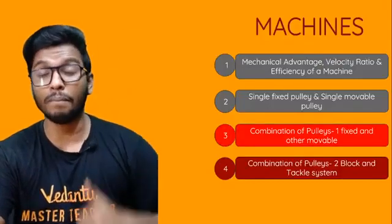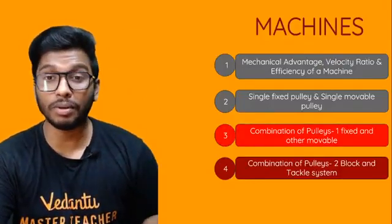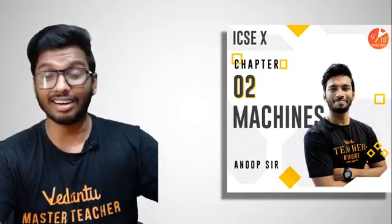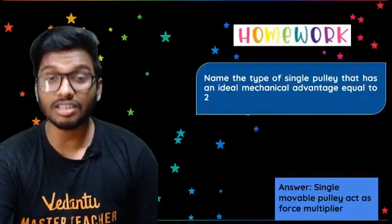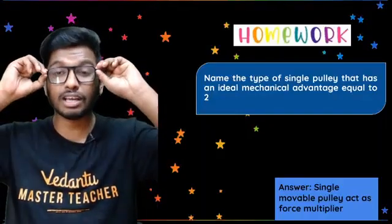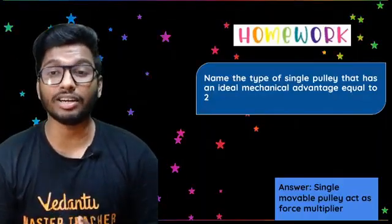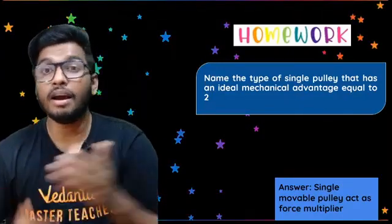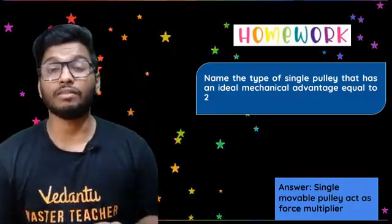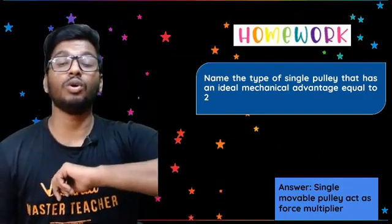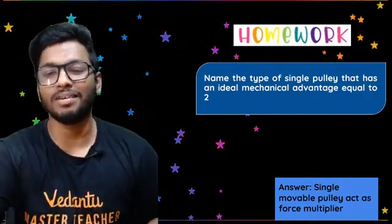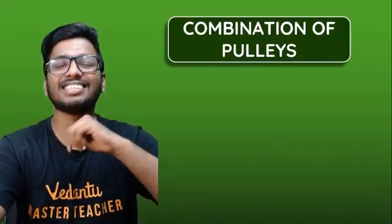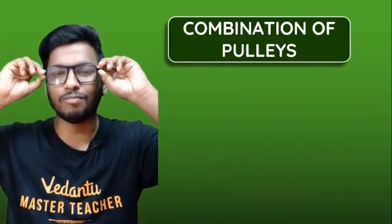So today we'll be doing computational pulley — one fixed and other mobile pulleys. But before that, let me give you the answer to the homework from the last session. The question was: name the type of single pulley that has an ideal mechanical advantage equal to two. The answer is straightforward — it is a single mobile pulley, because in a single mobile pulley the mechanical advantage is two and the velocity ratio is also two. Now let us start with combinations of pulleys.